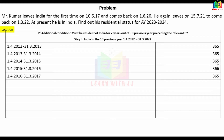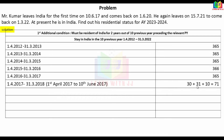For year 16-17: April = 30 days, May = 31 days, June = 10 days (up to but not including 10th June). That gives us 71 days in India for year 16-17. For years 17-18 and 18-19, he was outside India, so those are 0 days. For year 19-20, he comes back on 1st June 2020.